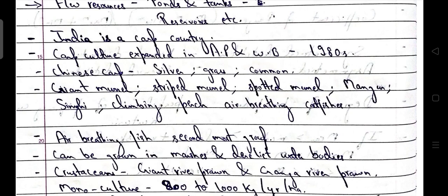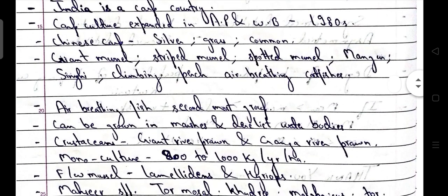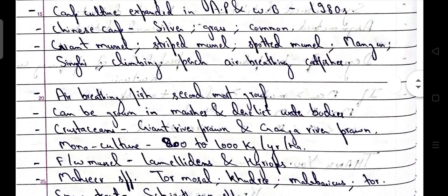Scientific names: rohu is Labeo rohita, katla is Catla catla, and mrigal is Cirrhinus mrigala. Carp culture expanded in Andhra Pradesh and West Bengal in the 1980s.